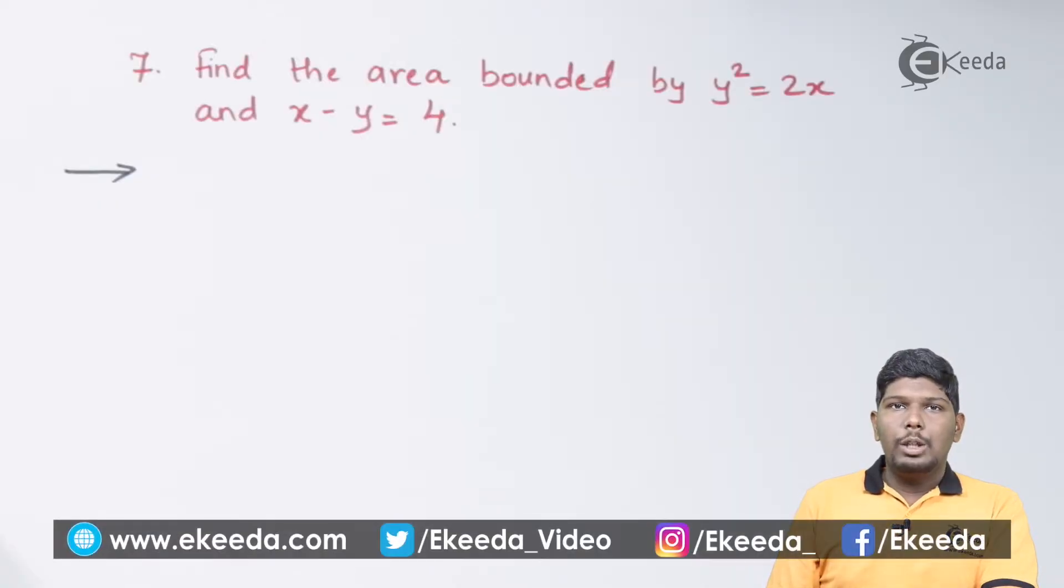Find the area bounded by y² = 2x and the line x - y = 4.